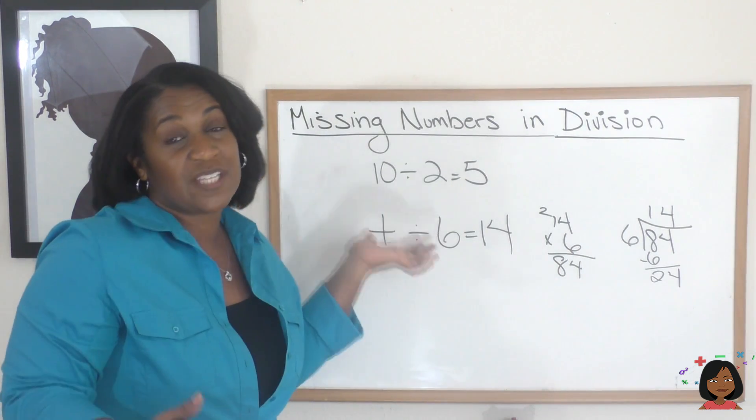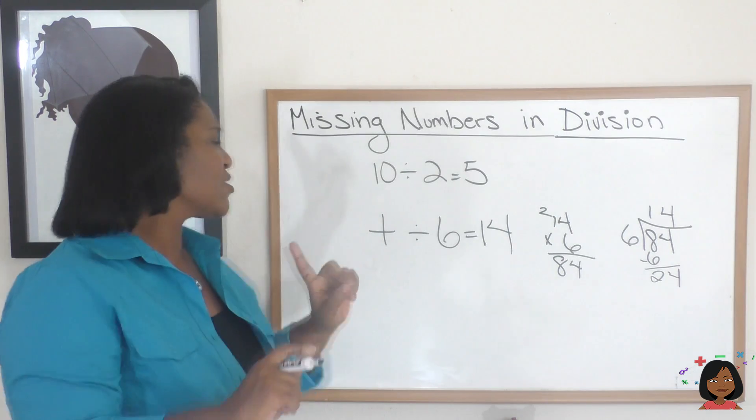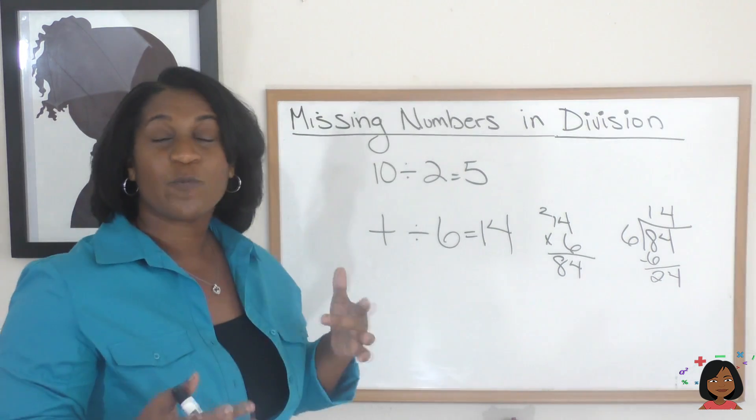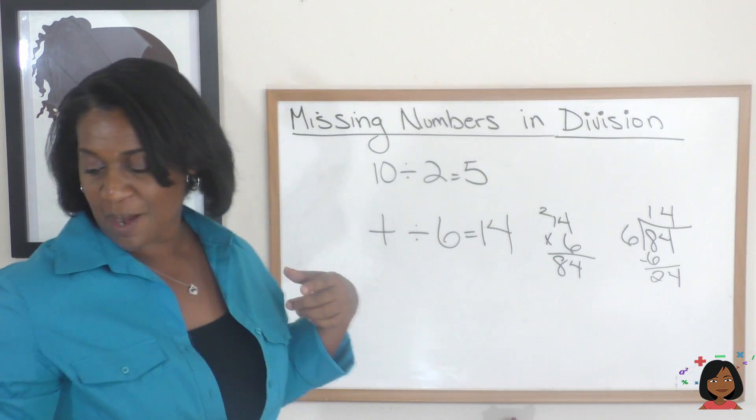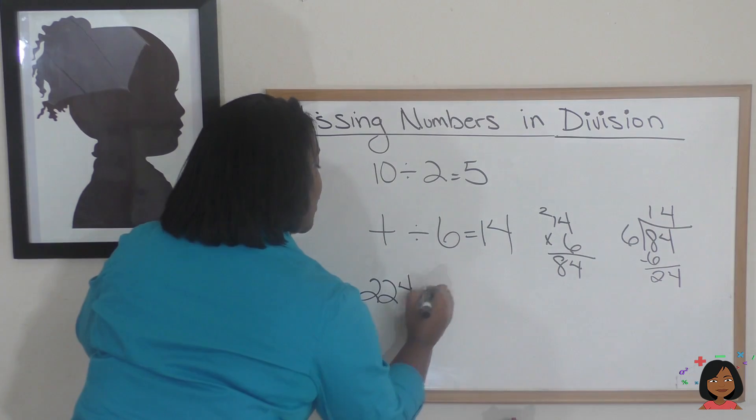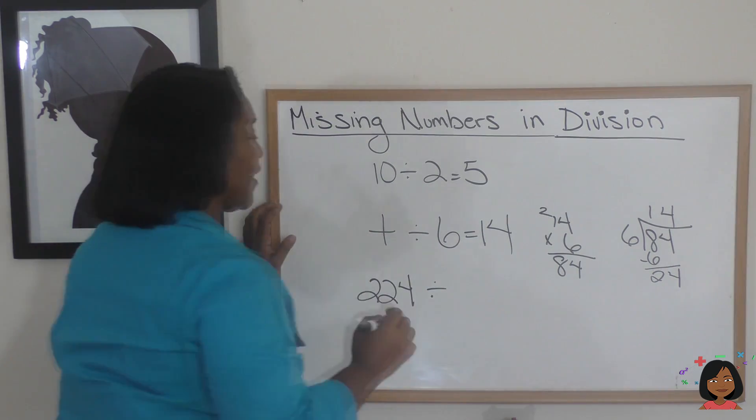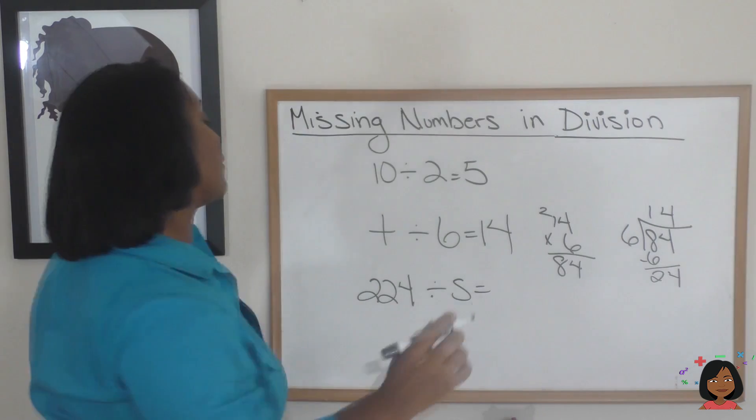So we used multiplication to find the missing number, which in this time was our dividend. But what if we wanted to switch this around and had a missing divisor? What would we do in that case? Let me give you some numbers. So I've got the number 224 divided by, we're going to use the letter S, that's our missing number, and we're going to say that the quotient is 32.